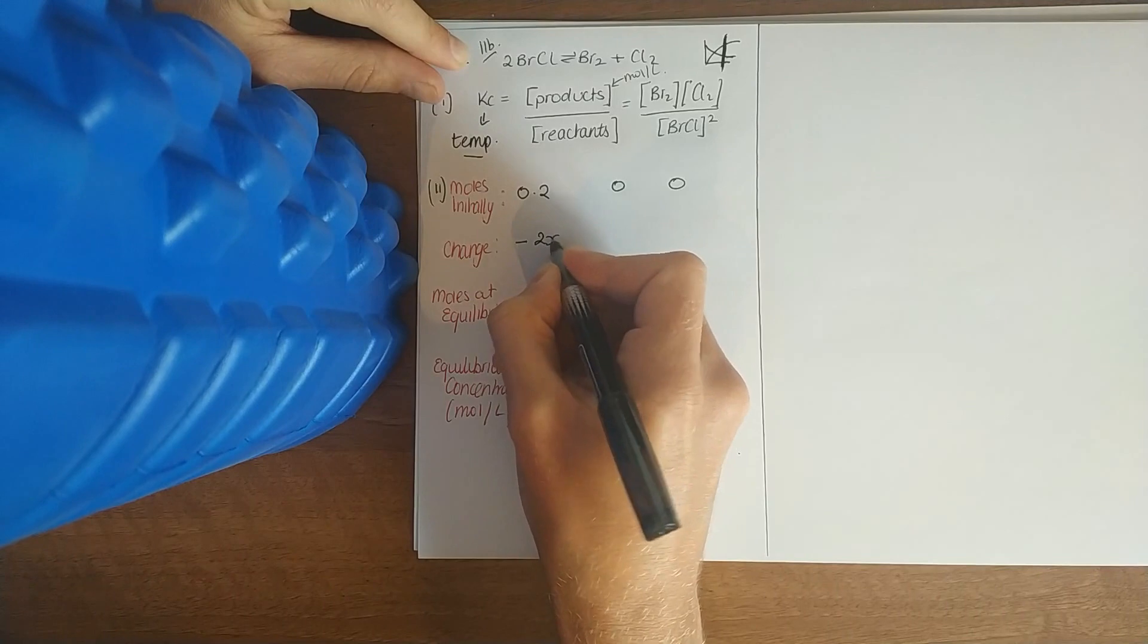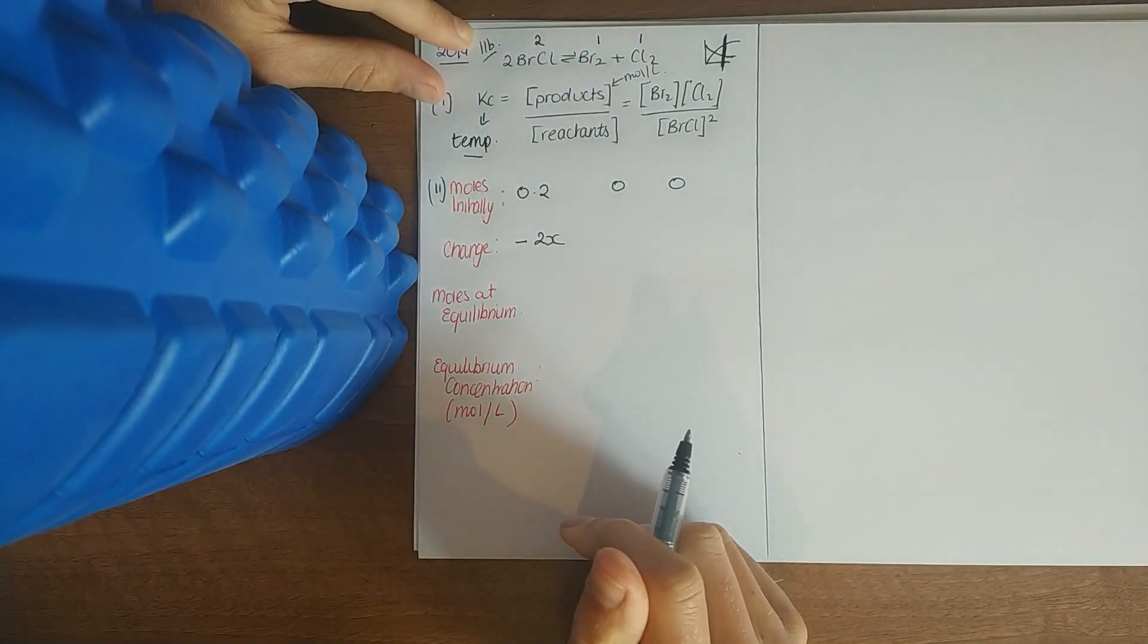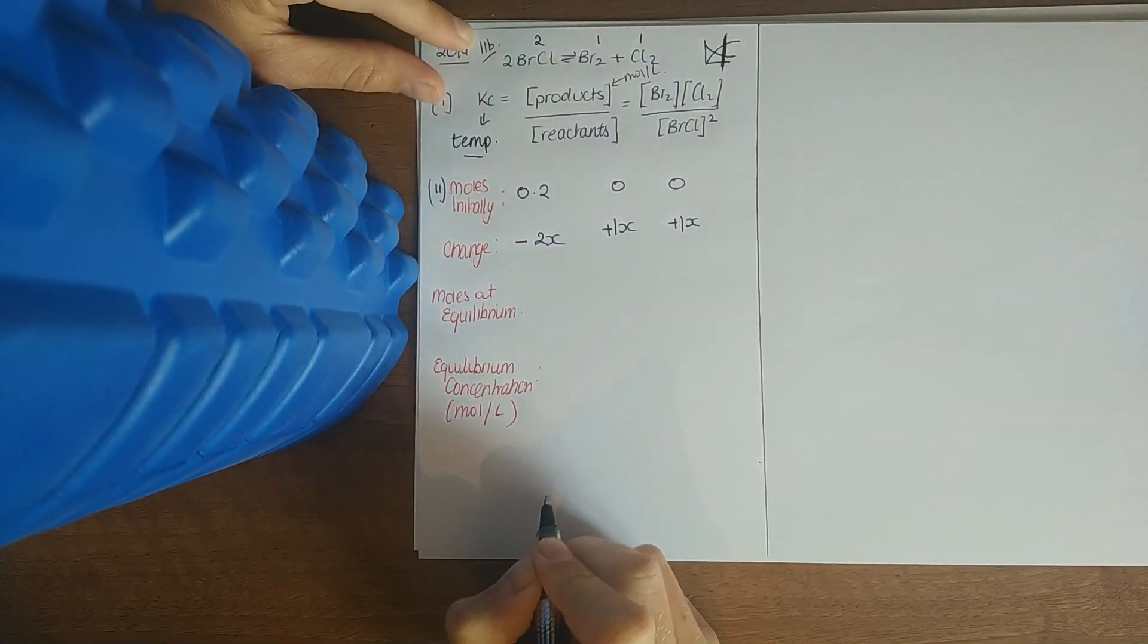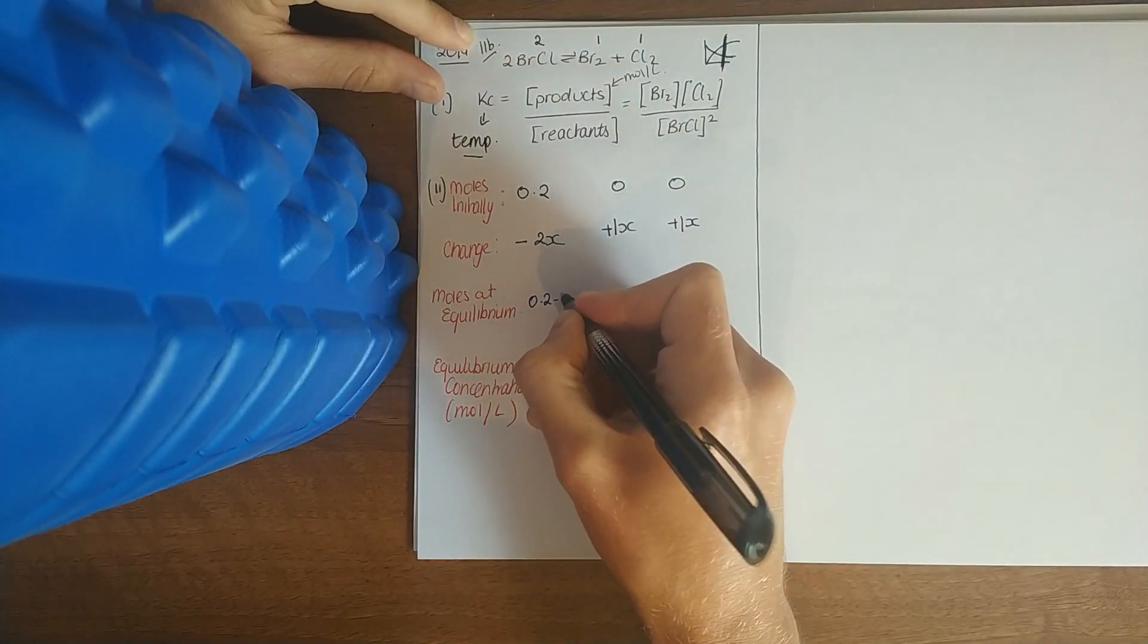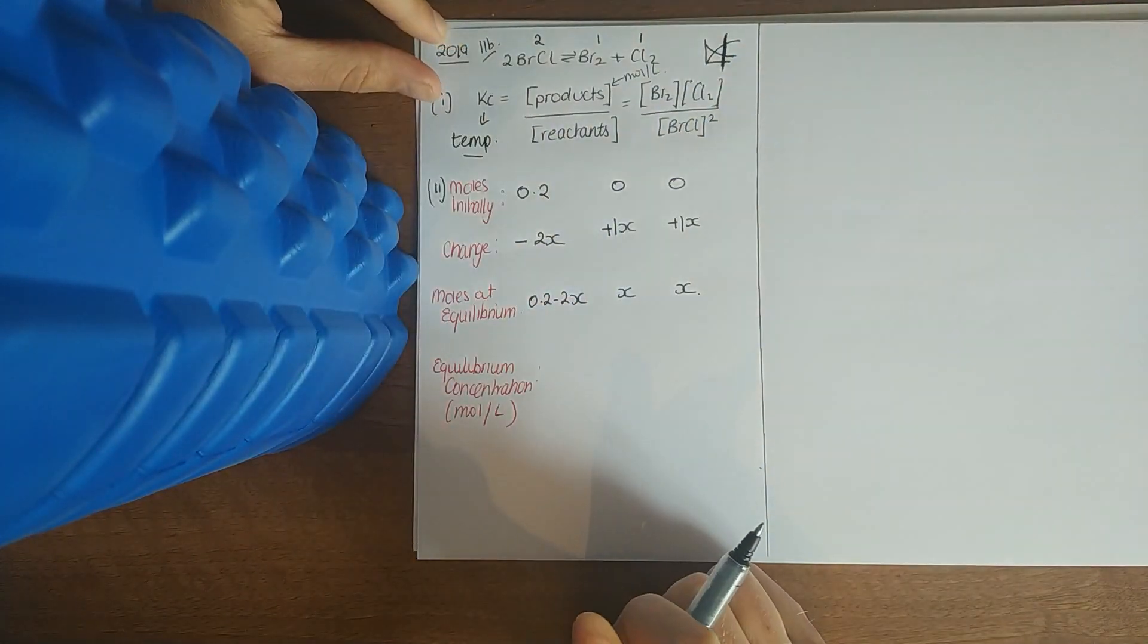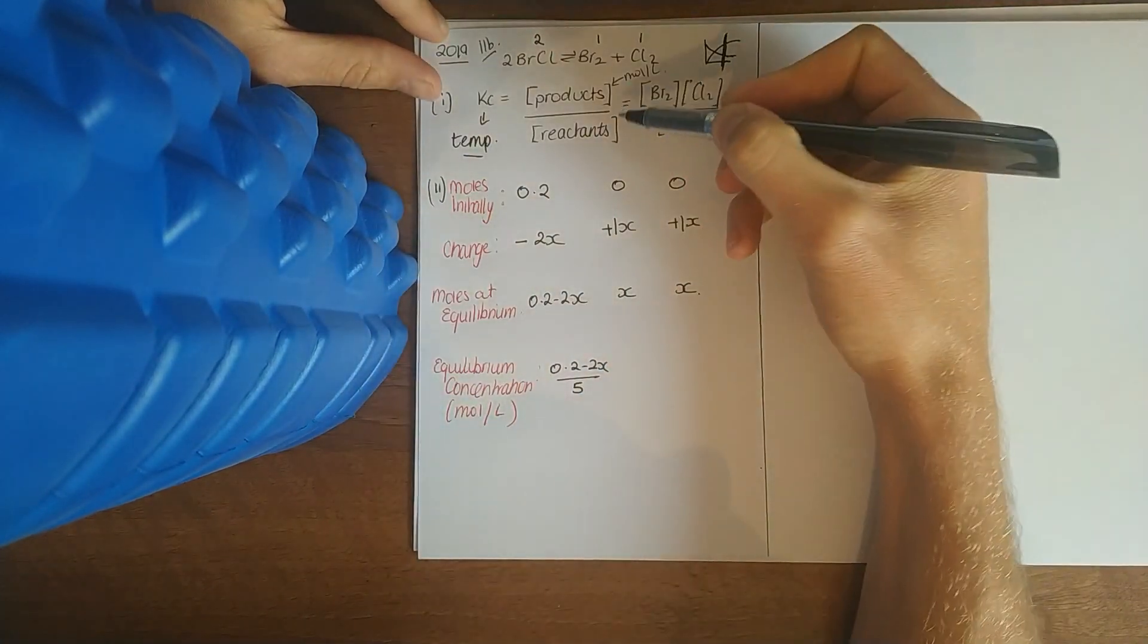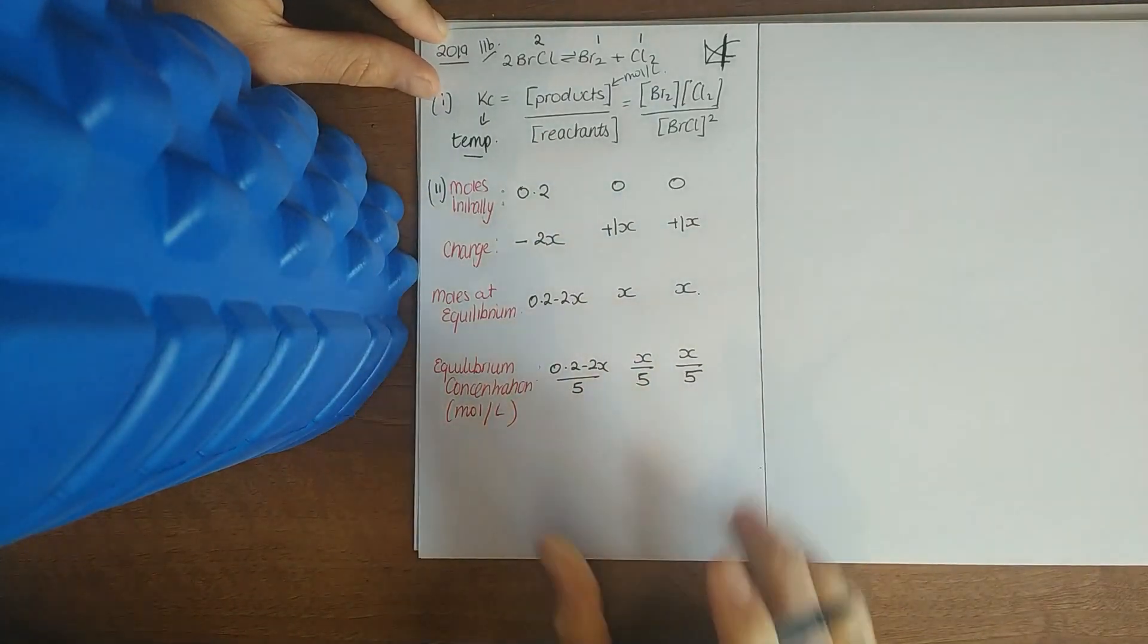The concentration of reactants are going to go down 2x. The reason is all to do with this ratio, 2 to 1 to 1. I like using full natural numbers rather than half numbers. Concentration of products are going to go up x. Work down the sum going down the way. Moles at equilibrium is 0.2 minus 2x, your change is 0 plus x, 0 plus x. The equilibrium concentration in moles per liter - we put this over the five, each of them over five because we want the concentration, x over five and x over five.